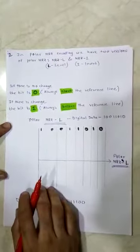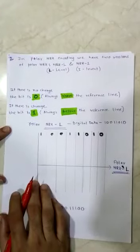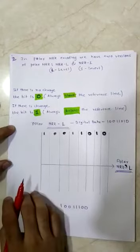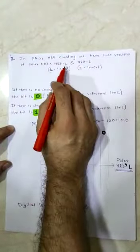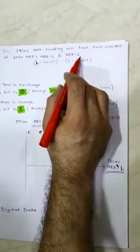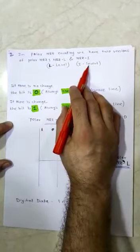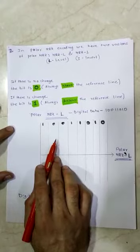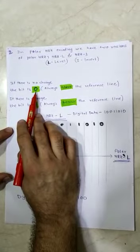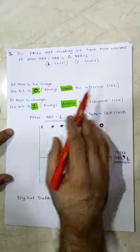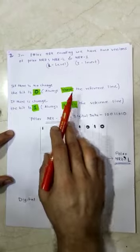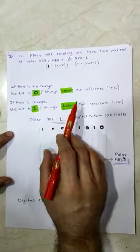Now we have completed unipolar NRZ. In polar NRZ scheme we have two variations: NRZ-L and NRZ-I. L means level and I means invert. When drawing a polar NRZ-L waveform, remember: when the bit is zero it is always above the reference line, and when the bit is one it is always below the reference line.